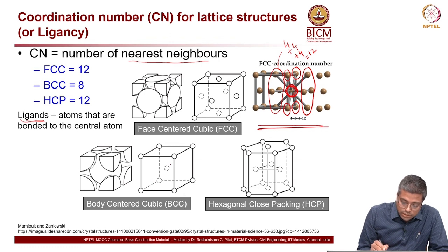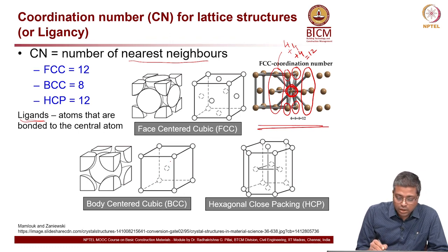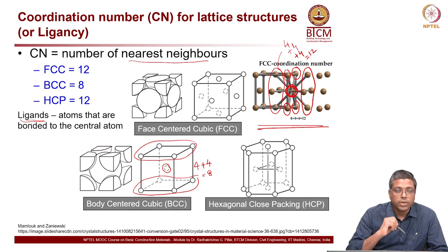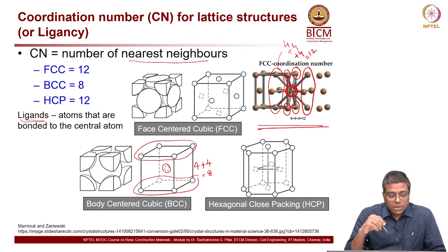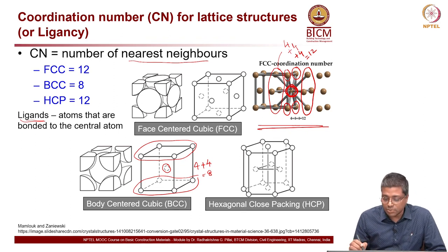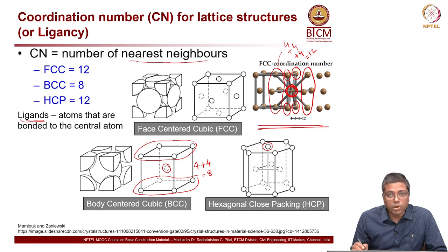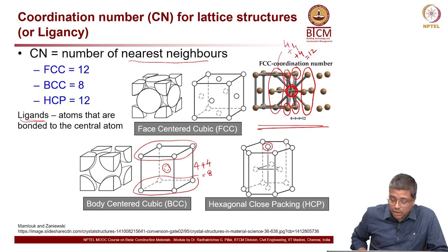For BCC, considering the center atom, you have 4 neighbors on one side and 4 on the other, giving 4 plus 4 equal to 8 — so the coordination number for BCC is 8. For HCP, considering a central atom, it will have 6 on one layer, 3 above, and 3 below, giving a coordination number of 12.